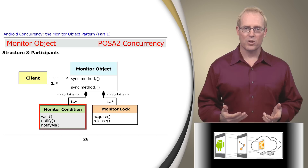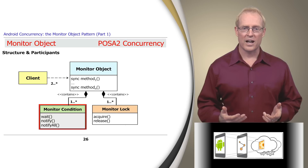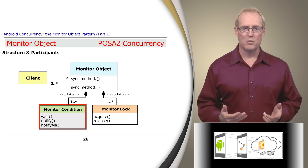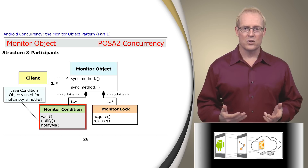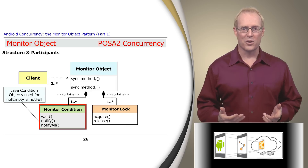Multiple synchronized methods running in separate threads can cooperatively synchronize and schedule their execution sequences by waiting for and notifying each other via one or more monitor conditions associated with a monitor object. Synchronized methods use a monitor lock in conjunction with one or more monitor conditions to determine when to suspend and resume their processing. For example, the LinkedBlockingQueue class uses two Java condition objects — not empty and not full — as its monitor conditions to coordinate producer and consumer threads that attempt to take elements from or put elements to an empty or full queue.